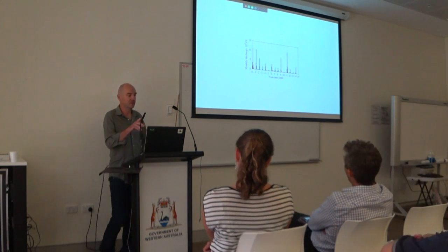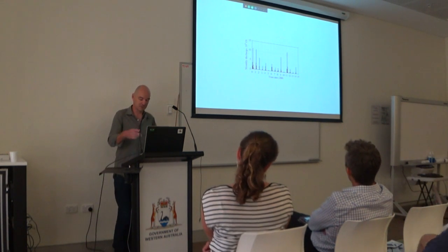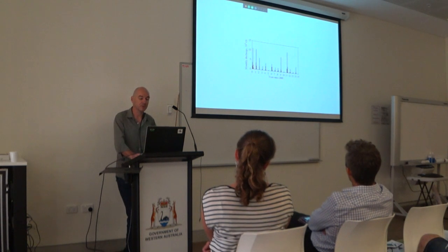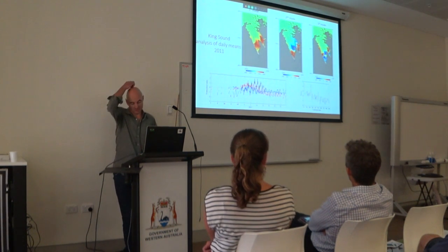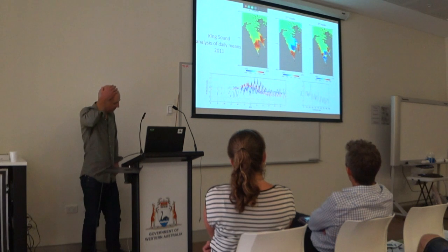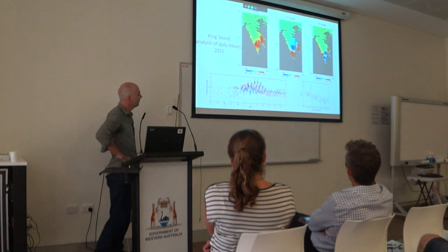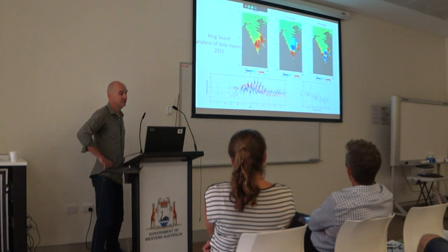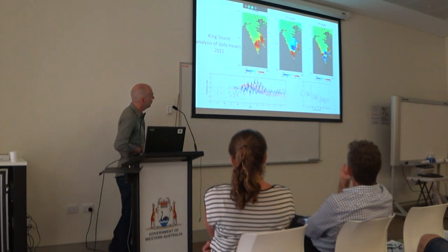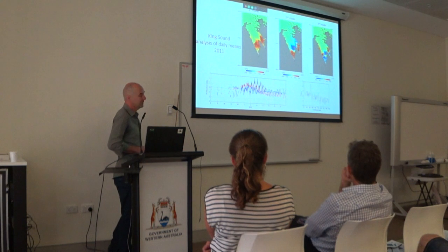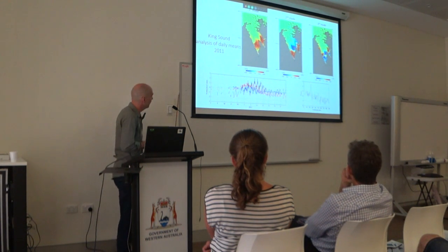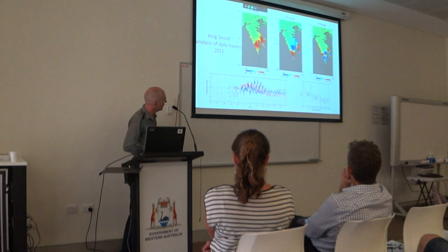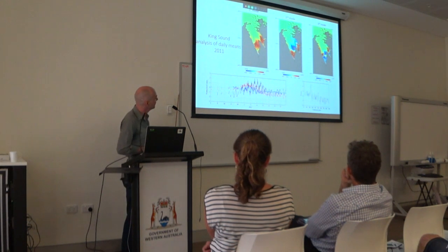2010 was a very dry year, chosen purposefully. Comparing it to 2011, which was the following very wet year, the results actually look very similar — there's not much difference. The system doesn't really respond strongly to the southern input of river water, which is kind of interesting.